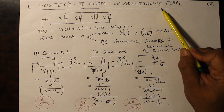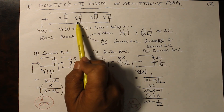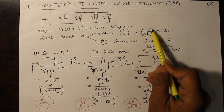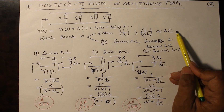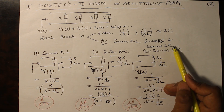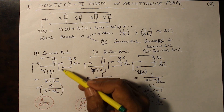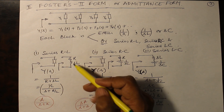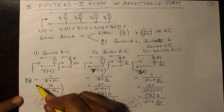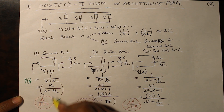Foster's Form 2 is the admittance form, where partial fraction expansion is taken. Since admittance equals the sum of admittances in parallel, each of Y1, Y2, Y3, Y4 can be 1/R, 1/SL, SC, or a series RL, RC, or LC combination. Series RLC is not in your course. For a series RL combination, Y(s) equals 1/Z(s) equals 1/(R + SL). Taking L outside gives (1/L)/(S + R/L), which is of the form A/(S + B) where A equals 1/L and B equals R/L.